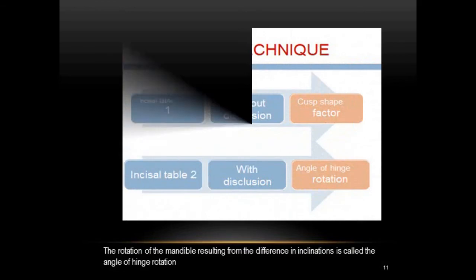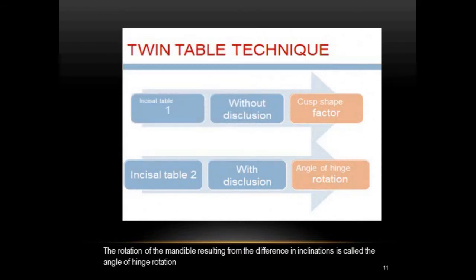Now let's look at the twin table technique in detail. As the name indicates, there are two incisal guide tables. The first incisal guide table is called the incisal table without disclusion — to accommodate the cusp shape factor. The second incisal guide table is the incisal guide table with disclusion — to accommodate the angle of hinge rotation.